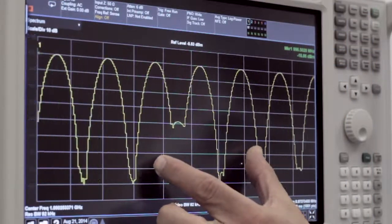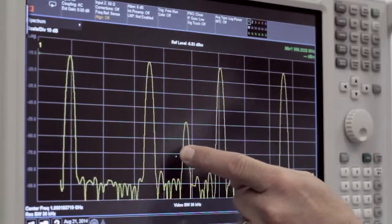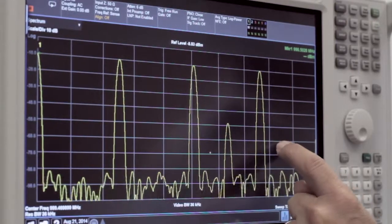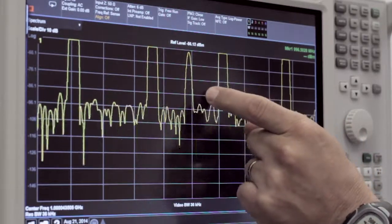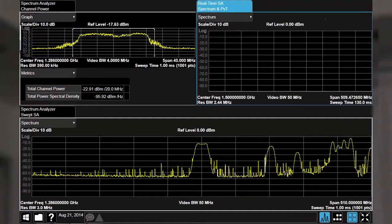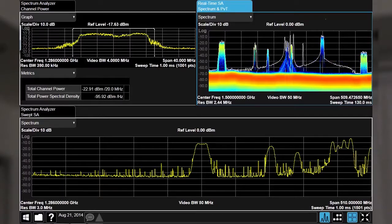The UXA simplifies the measurement setup by streamlining the familiar X-Series menu structure, optimized for the large 14.1 inch capacitive touch screen, which provides an array of flexible measurement displays.